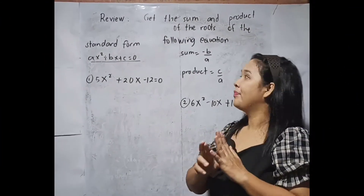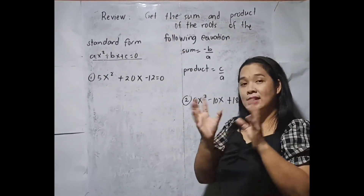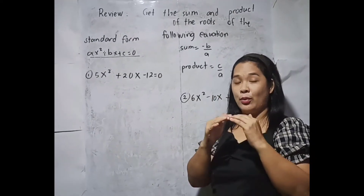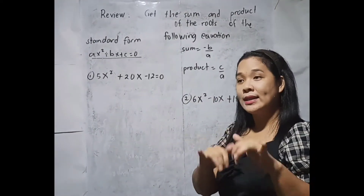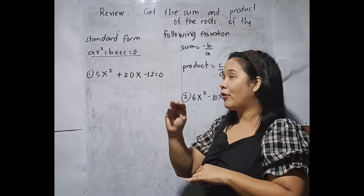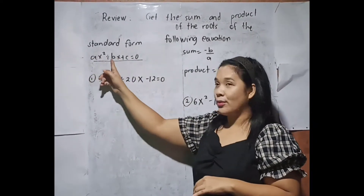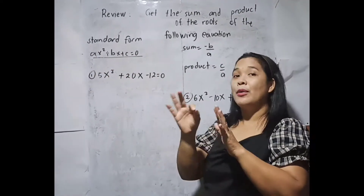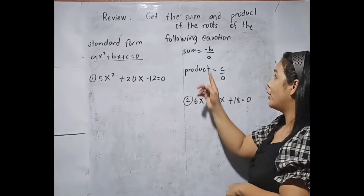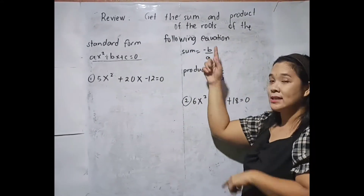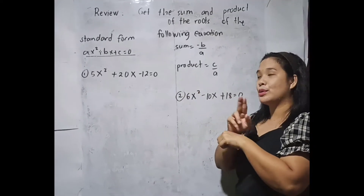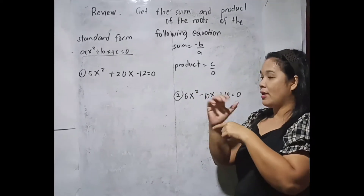First, let us try to review. So again, let us get the sum and the product of roots in the given equation. Our standard form is ax squared plus bx plus c equals zero. The formula we are going to use for sum is negative b all over a, and for the product, we will use c over a.